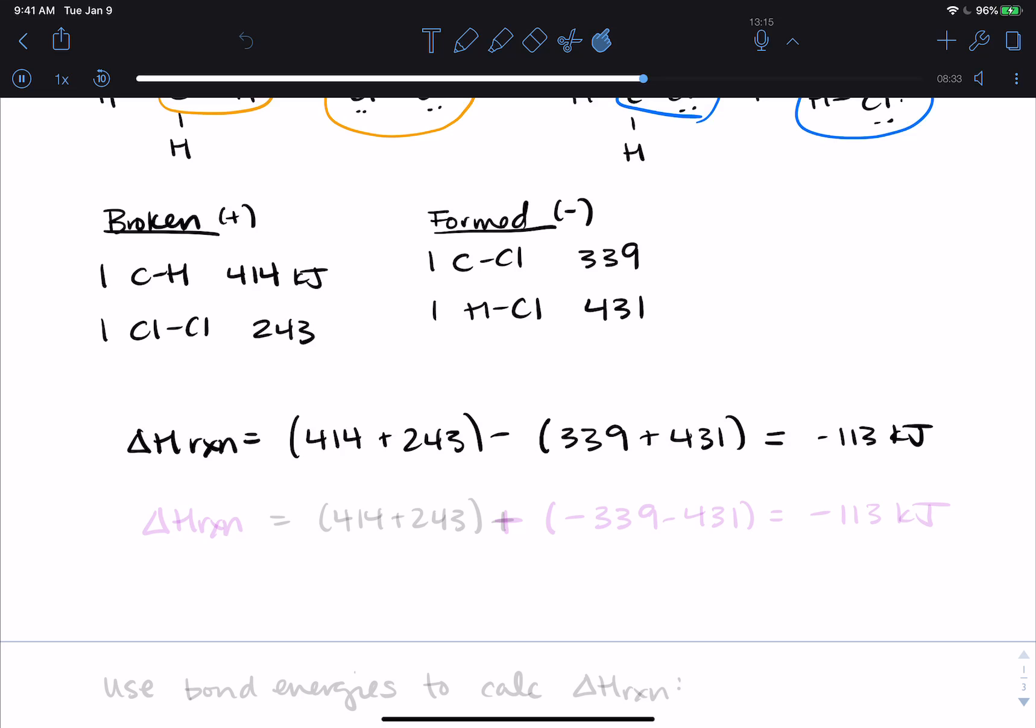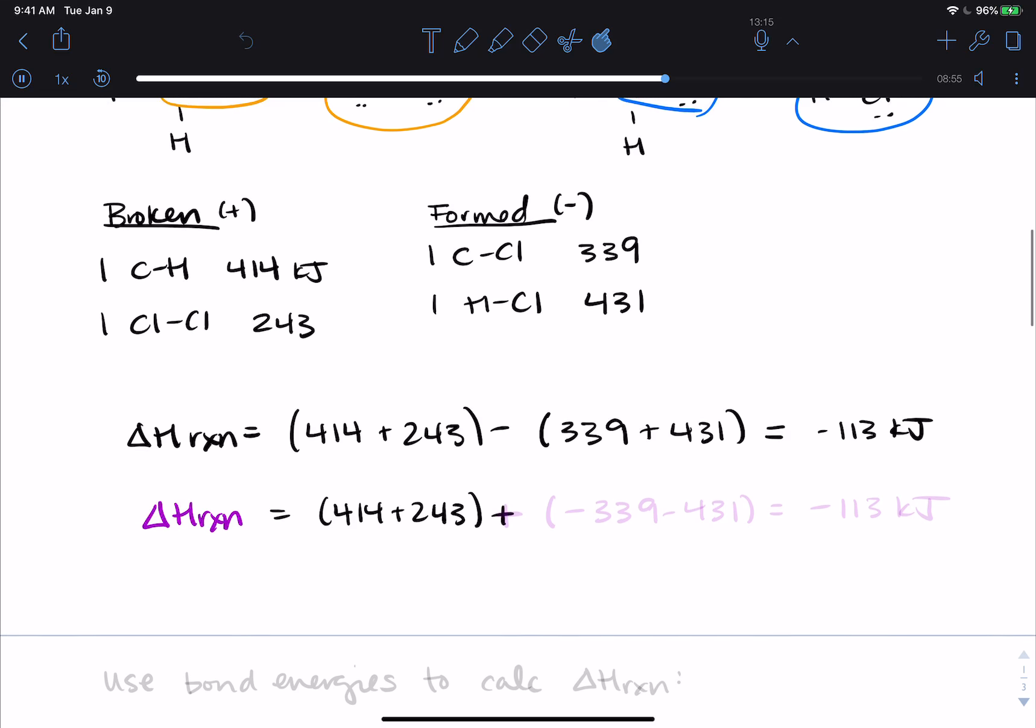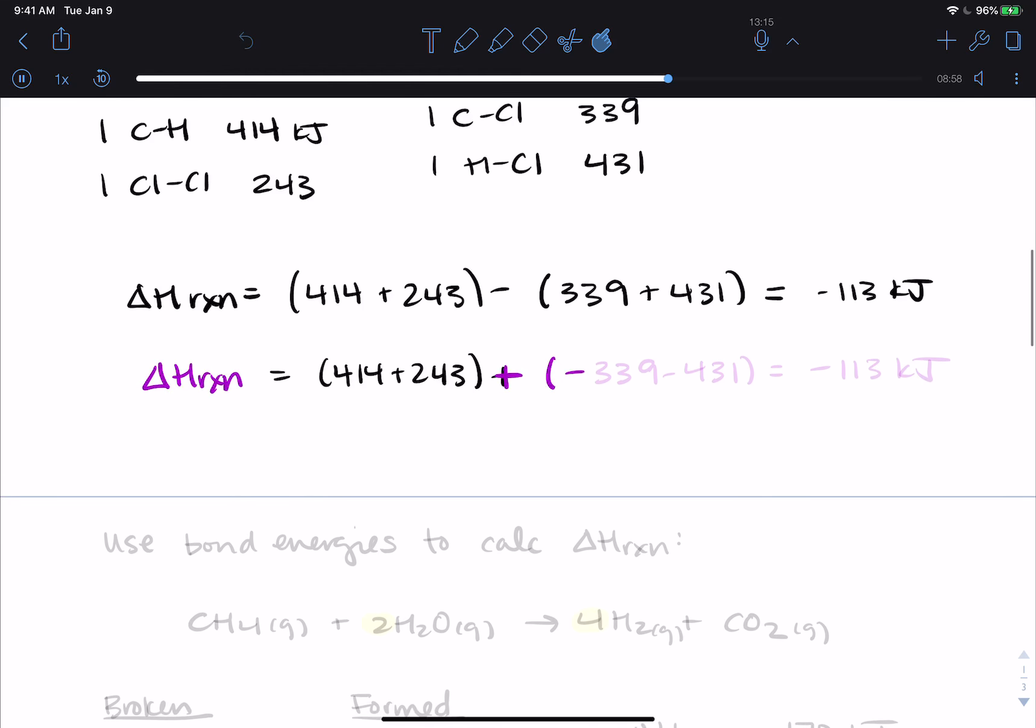This is my ΔH reaction based on the bonds that I broke and formed. If we're using Tro and you have the plus version, the ΔH reaction is it's still 414 plus 243 and then it has you add them together. Let me show the difference in purple. We have to say negative 339 minus 431. And you still get negative 113 kilojoules. But I just want you to be aware of what the different equations look like and how you can handle it depending on which one you have.